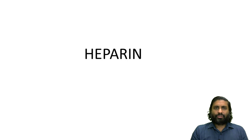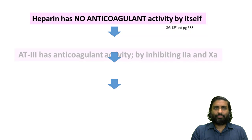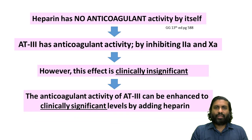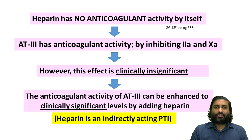Moving on to heparin: in previous discussions, we talked in detail about its mechanism. Heparin by itself has no intrinsic anticoagulant activity. The liver produces a protein known as antithrombin, which can inhibit factor 2a and 10a, but this inhibition is clinically insignificant on its own. However, when pharmacological doses of heparin are introduced, they greatly enhance the ability of antithrombin to inhibit factor 2a and factor 10a. Since heparin needs antithrombin to act, it is classified as an indirectly acting parenteral thrombin inhibitor.